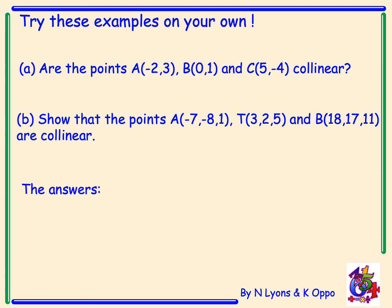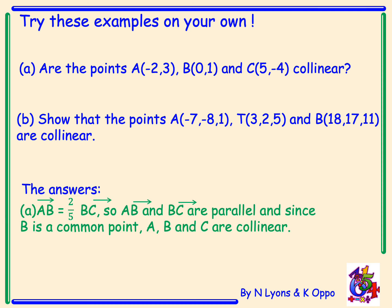The answers. For A, vector AB is equal to two-thirds of vector BC. Therefore, the vectors are parallel, and we have a common point B, so they are collinear.